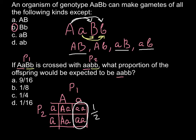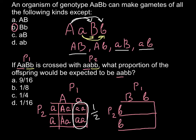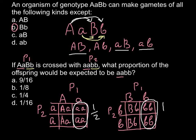Now let's do the same for the second set of alleles. Parent 1 is again on top and parent 2 on the side. Parent 1 is heterozygous — capital B and small b — and parent 2 is homozygous recessive — small b, small b. The results are the same as in the previous example: capital B small b, capital B small b, small b small b, and small b small b. Once again, we are looking for the small b small b genotype, and this is going to be one half.